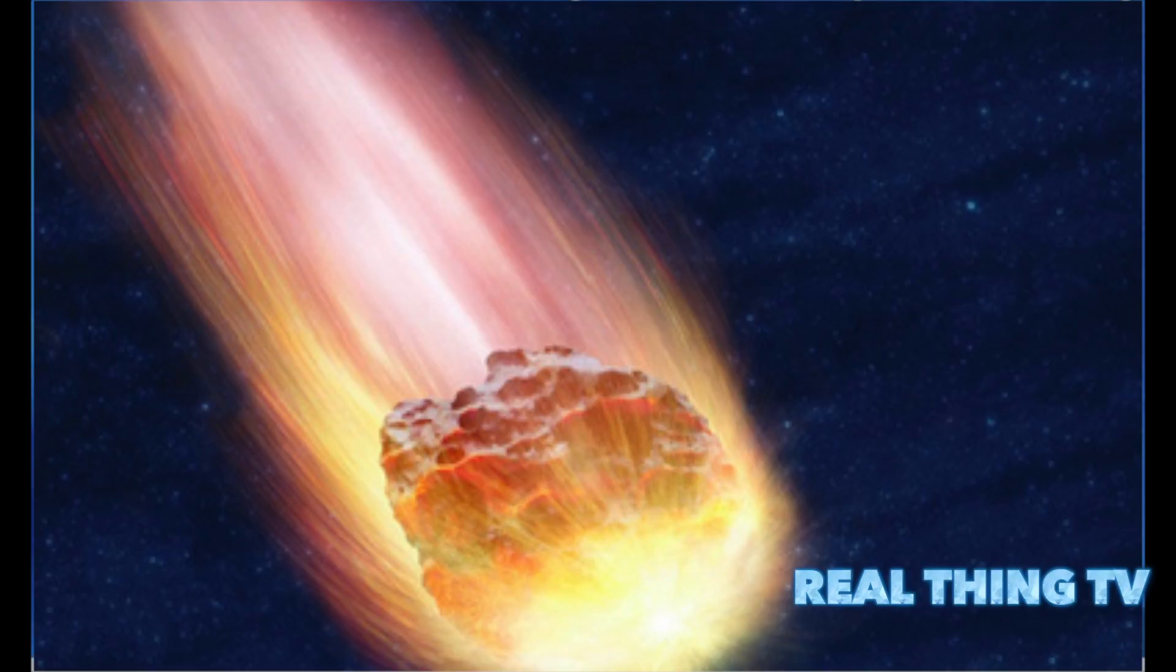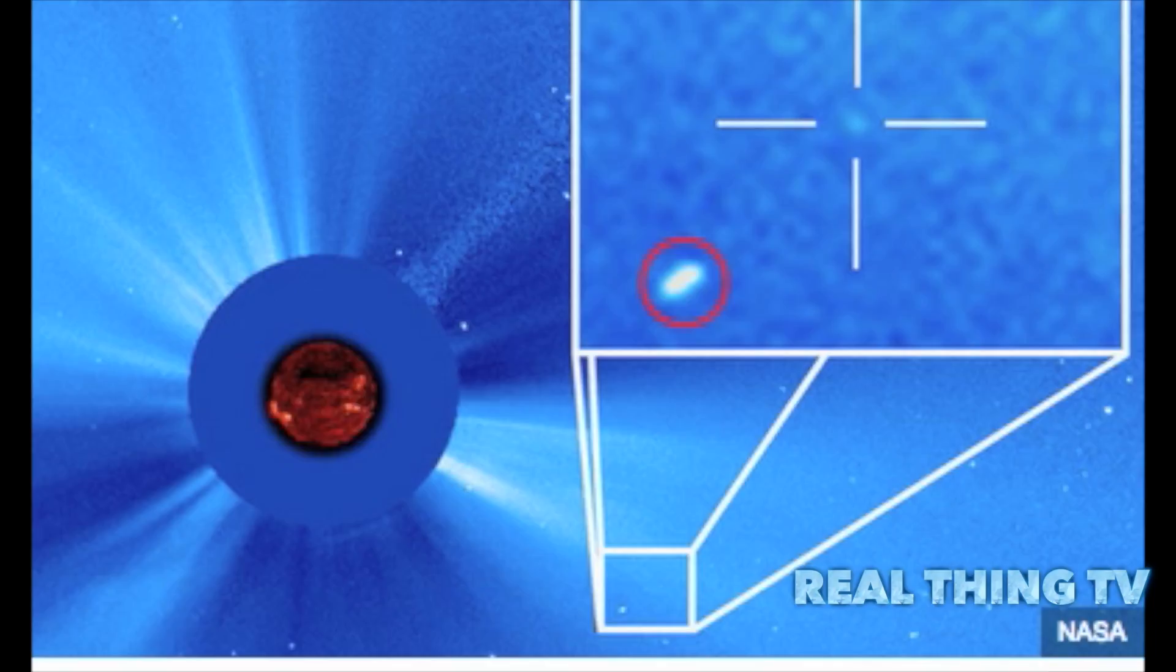It was first spotted in the images by amateur astronomer Arrakat Boonklod of Sumatsongkram, Thailand. Comets are clumps of frozen gases and dust that contain material from the beginning of our solar system.